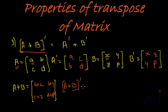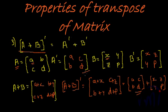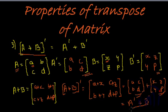Now let us find (A+B)'. The diagonal elements of A+B remain the same — a+x and d+p — but the non-diagonal elements get flipped, giving b+y and c+z swapped. This is (A+B)'. This can always be written as the matrix with a, c, b, d plus the matrix with x, z, p, y. This is nothing but A' plus B'. Hence (A+B)' = A' + B' is proved.